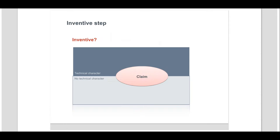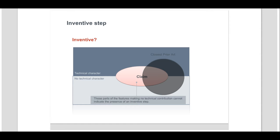To illustrate the proceeding, starting from a claimed subject matter, all non-technical aspects are reviewed to determine if any of them contribute to the technical character. On the basis of the technical content of the claimed subject matter, the closest prior art is then established and the differences between the claimed invention and the closest prior art are identified. Those aspects of the claimed subject matter determined not to contribute to its technical character cannot be used to indicate the presence of an inventive step. However, they may be used in the formulation of the objective technical problem as a constraint to be met.